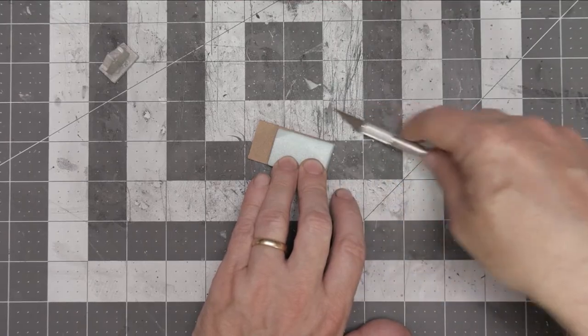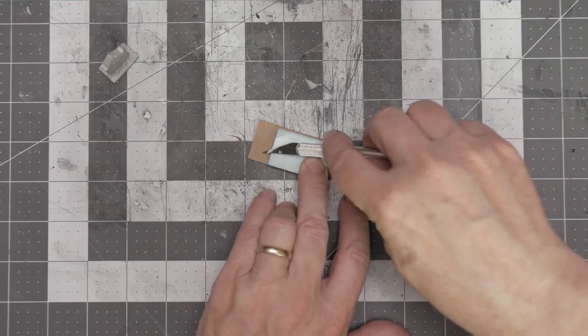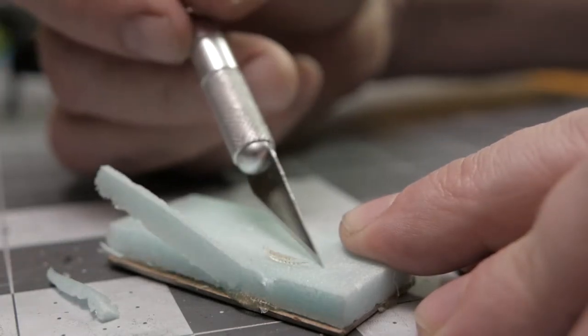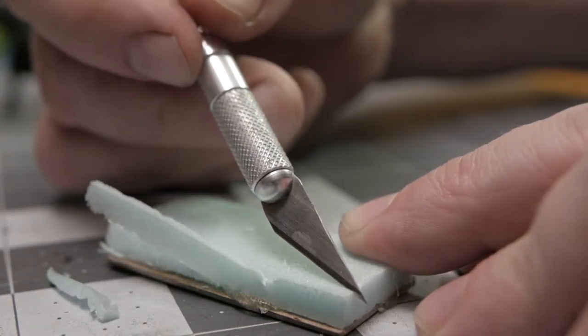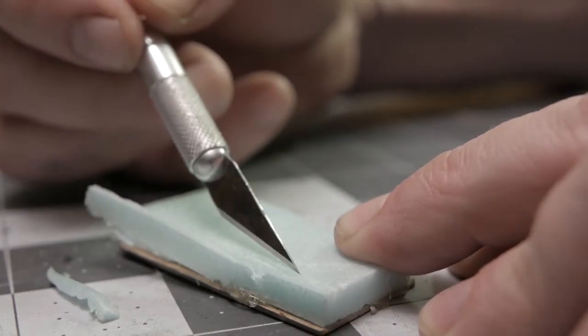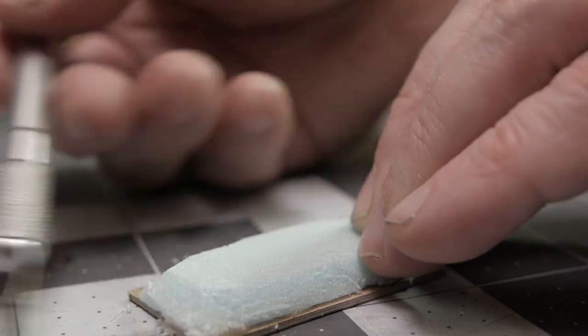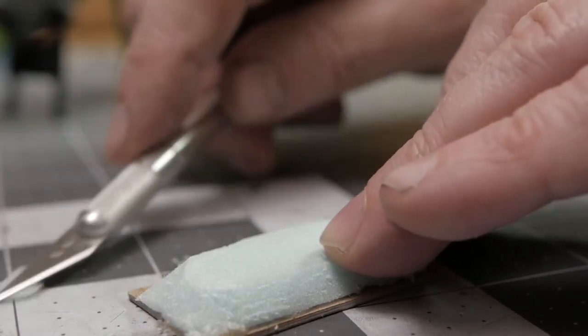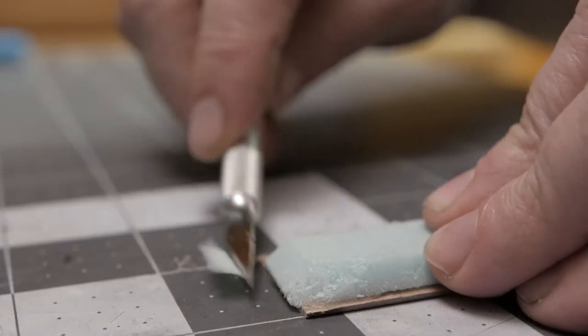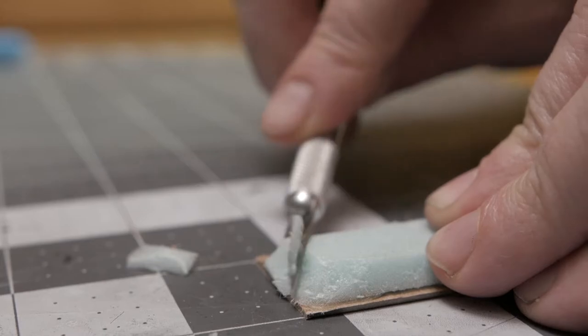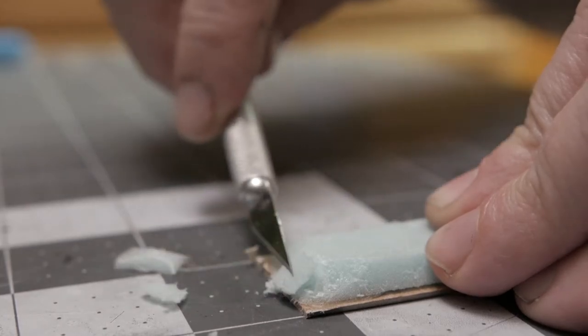So I went ahead and started the process of cutting an incline into the foam so that it would slope into the base and form a mound. I go all around the foam, making sure that I take each edge and slope it down to the base, and on the corners I sort of round them off a little bit.